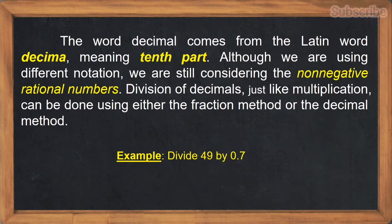Example: divide 49 by 0.7. In dividing 49 by 0.7, we have three steps to follow. For step number one, always make the divisor a whole number. Since it is one decimal place, multiply the divisor by 10. At the same time, multiply the dividend by 10. If we have 49 divided by 0.7, that would become 490 divided by 7.